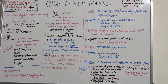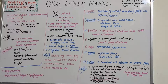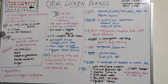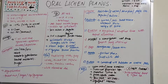Hello everyone, welcome back to another session on dentistry and more. Today's topic is oral lichen planus. It is an immunological mucocutaneous lesion which can affect either the skin, mucosa, or both, so it is not just confined to the oral cavity — it is present in other parts of the body too.